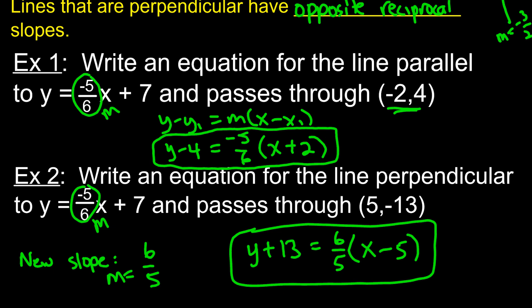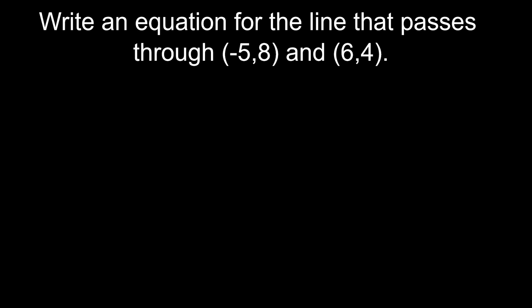All you need is the slope — plug in the point and you're good to go. Last thing: what if you're just given two points and you don't know the slope? We'll figure out the slope using the formula: slope equals y2 minus y1 over x2 minus x1. Just pick one point as (x1, y1) and the other as (x2, y2) and plug them in.